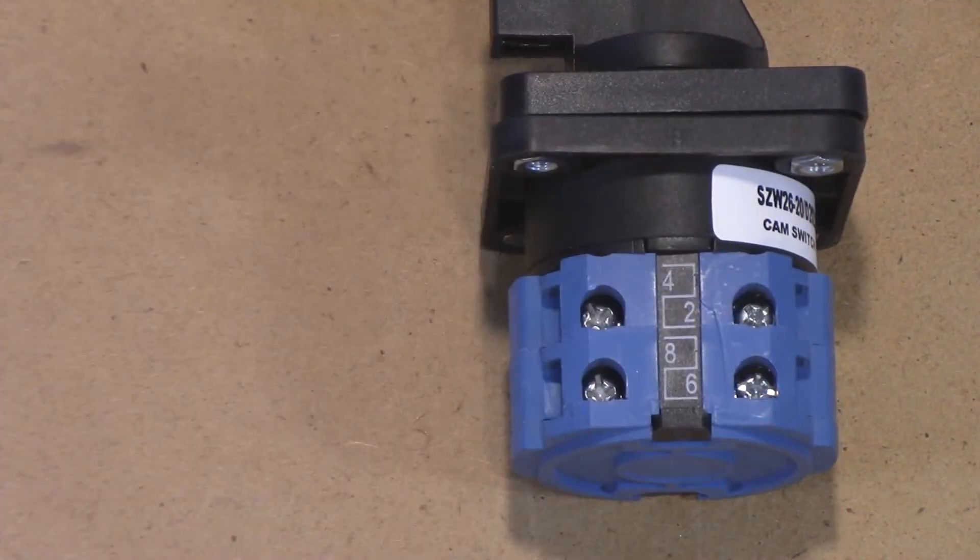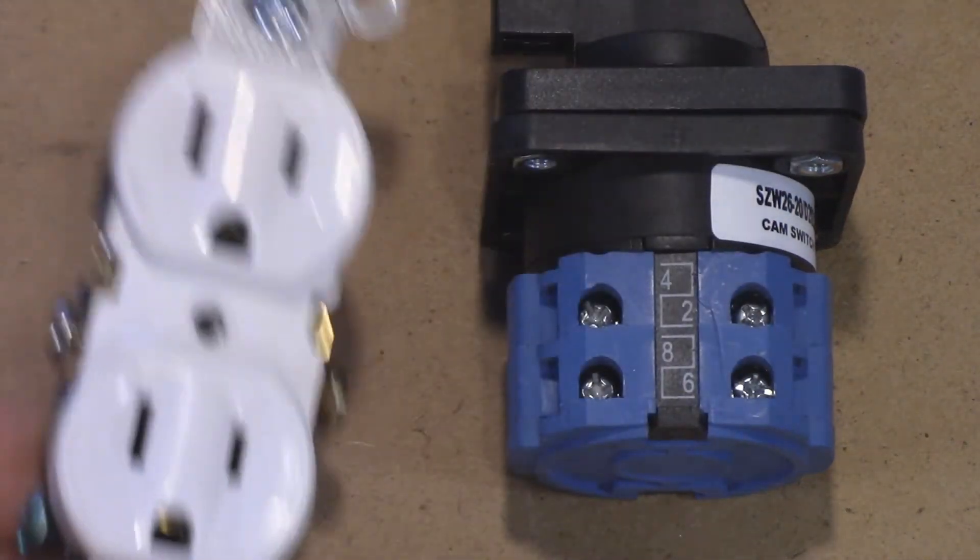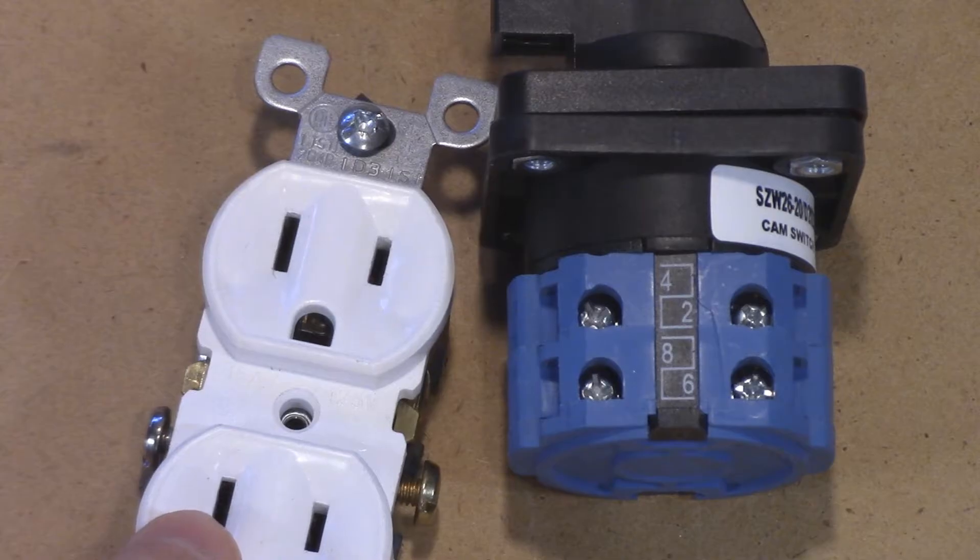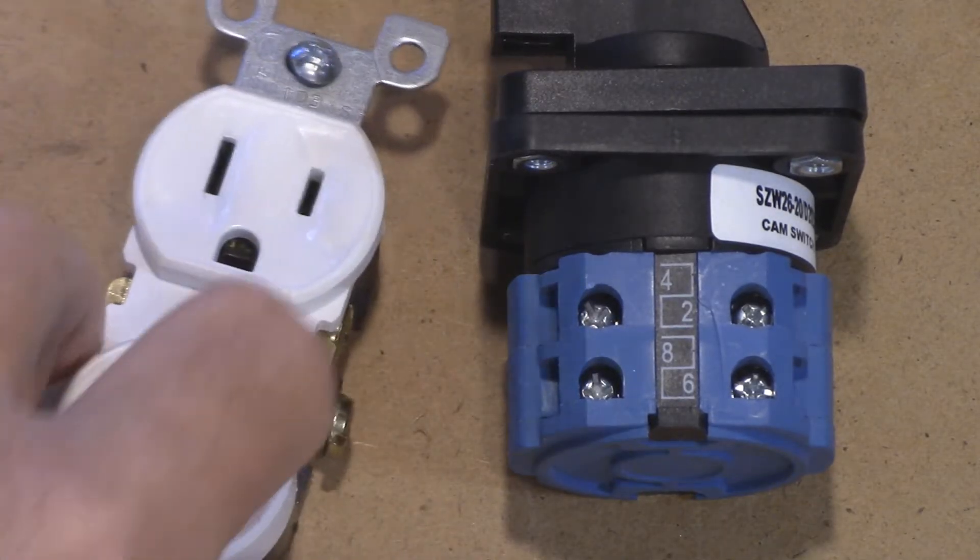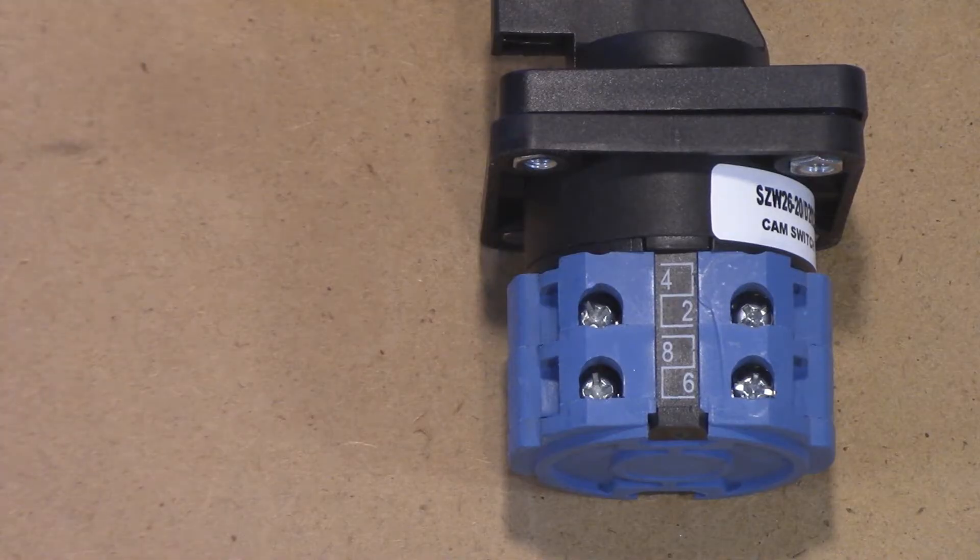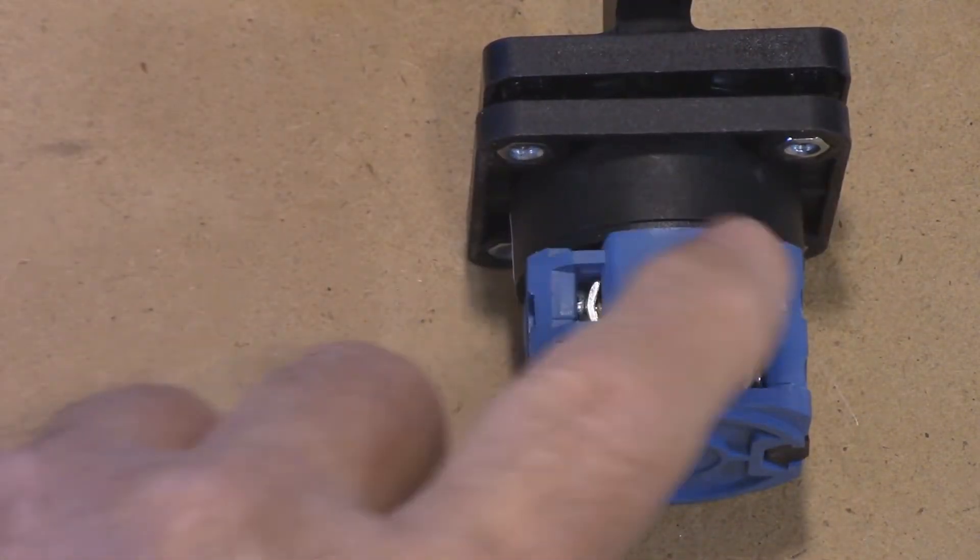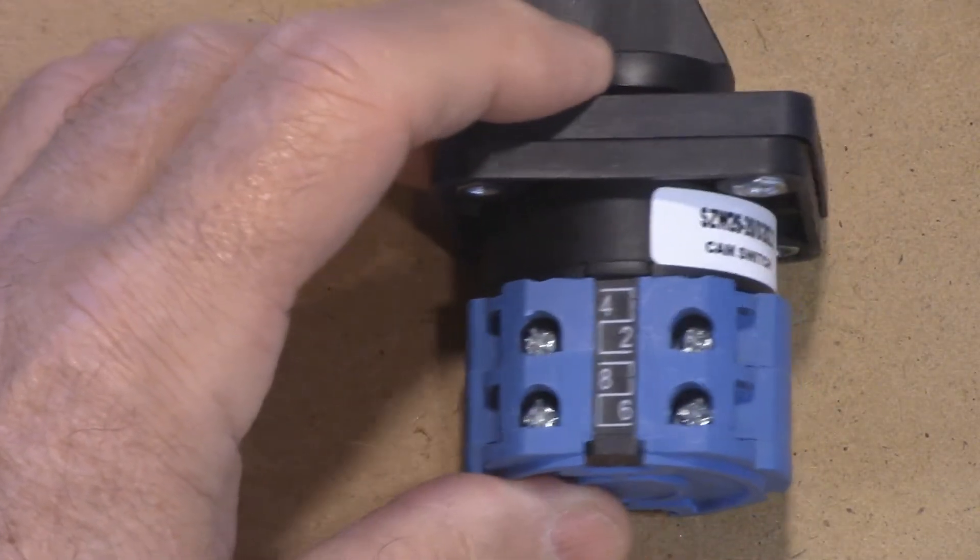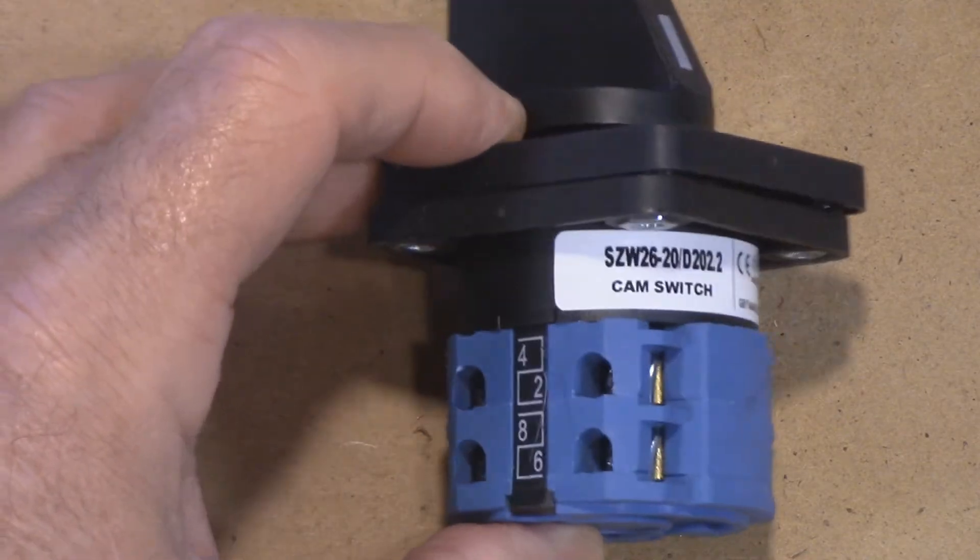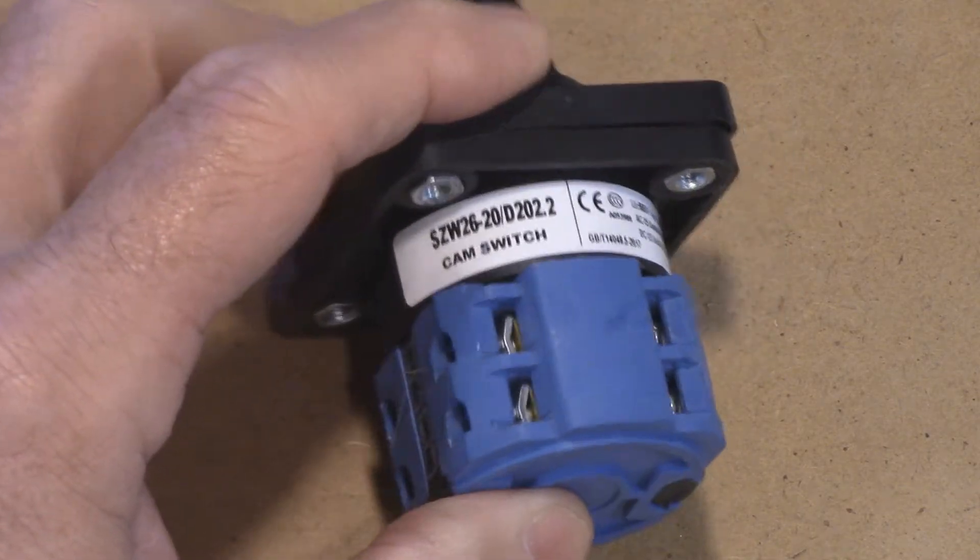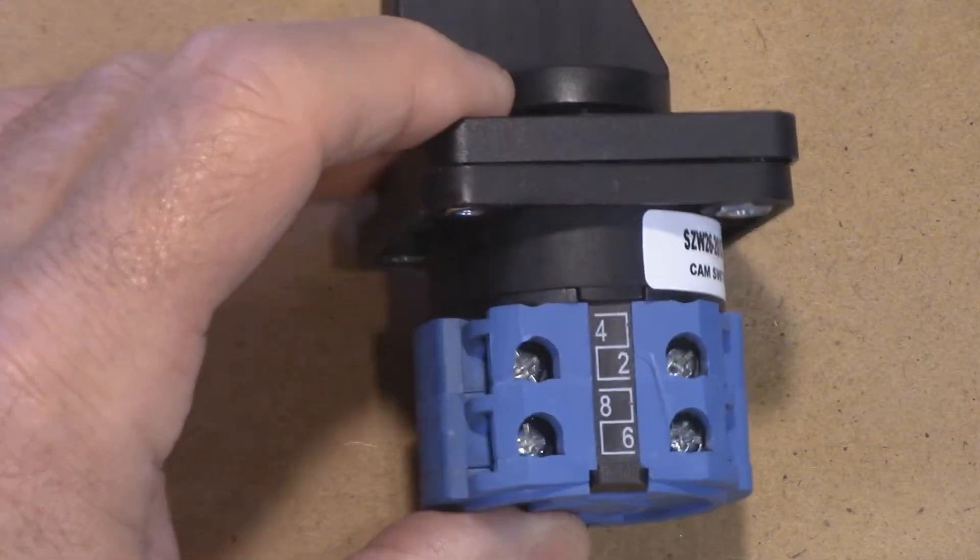This here has eight contact points, four on one side and four on the other. I understand that part. But which ones are the hot and which ones are the neutral? I don't want to wire it up so all the hots are on the neutral and the neutrals are on the hot. That can cause a lot of problems. What do we do here? Let's take a closer look and let's see how we're going to identify which wires go where.